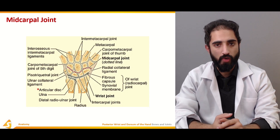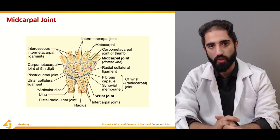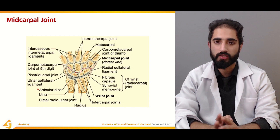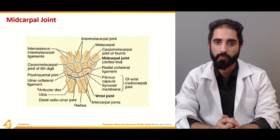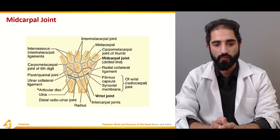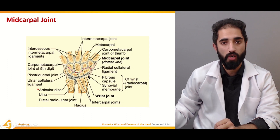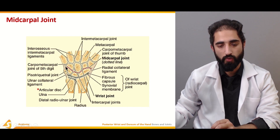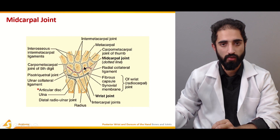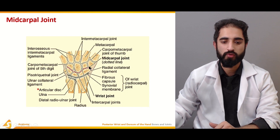The midcarpal joint consists of plain joints due to the irregular shape of the carpal bones, and only a limited amount of movement is possible. It therefore contributes to and complements the movements of the radiocarpal joint rather than having its own independent degrees of freedom. As you can see here, the radiocarpal joint lies between the radius and ulna above and the proximal carpal row below, and the midcarpal joint lies between the proximal and distal carpal rows.